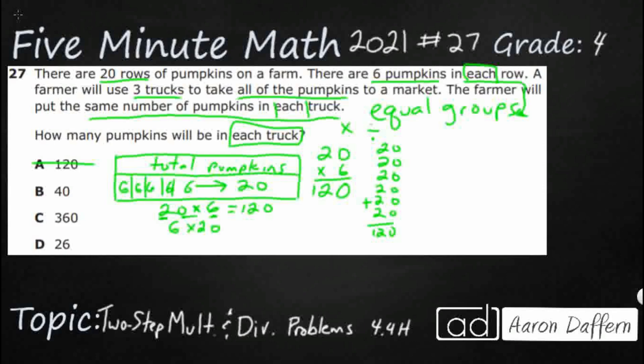We haven't even messed with the trucks yet. So don't take the bait. Let's keep reading. A farmer will use three trucks to take all of the pumpkins. All of the pumpkins. That's our 120. So let me draw a new strip diagram here so we can start this. We've got 120 pumpkins.